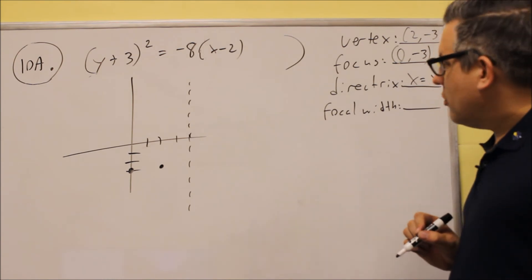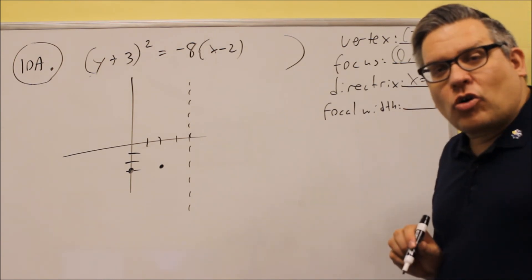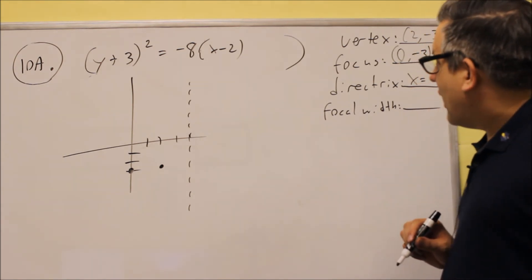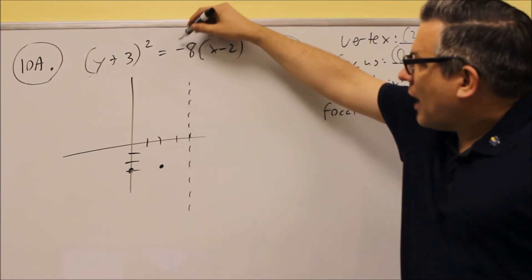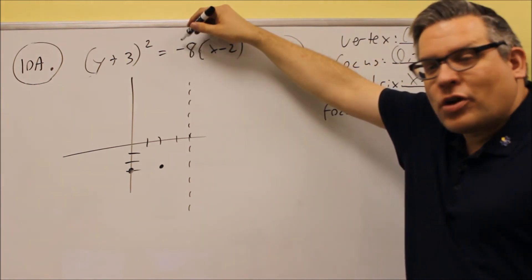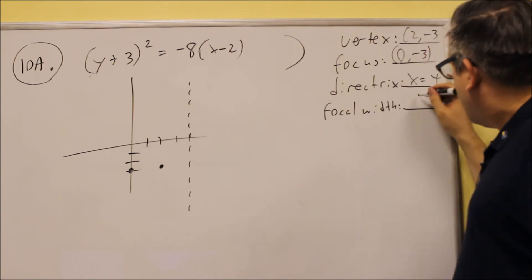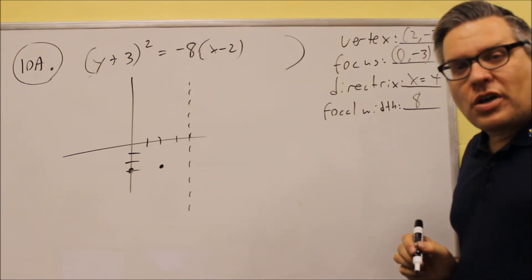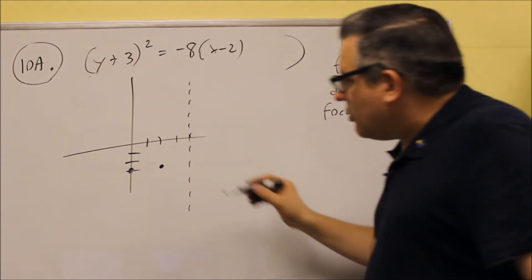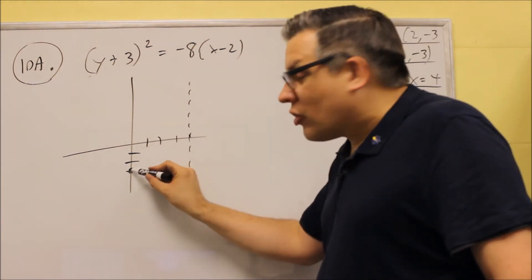Now the last thing we're going to do is the focal width. Now the focal width is actually always going to be the absolute value of this number that's in front of the parenthesis. So the focal width is just going to be 8 in this case. And so because of that, we're going to, from the focus which is here, we're going to split the 8 in half and go 4 going up and 4 going down.